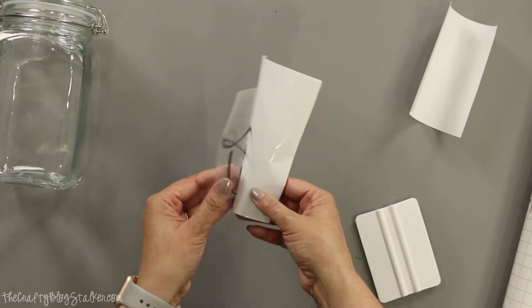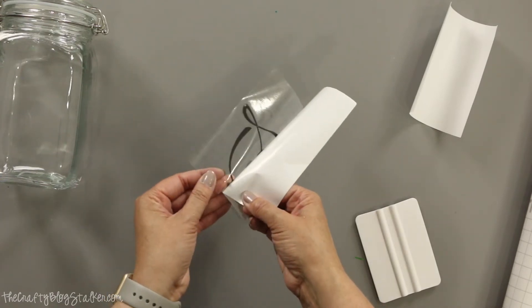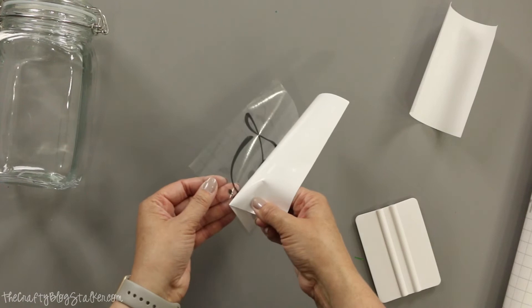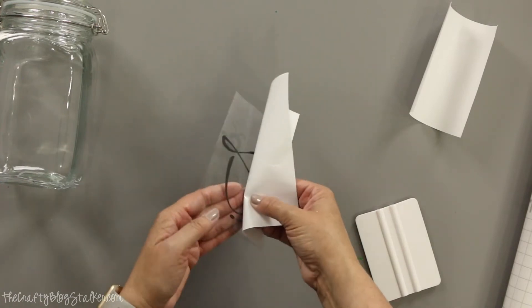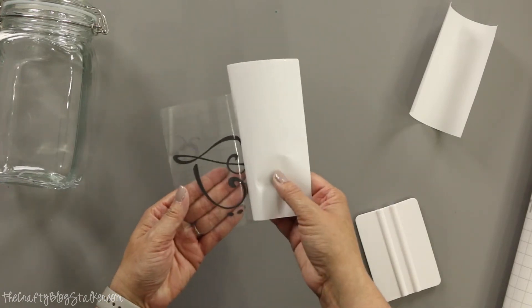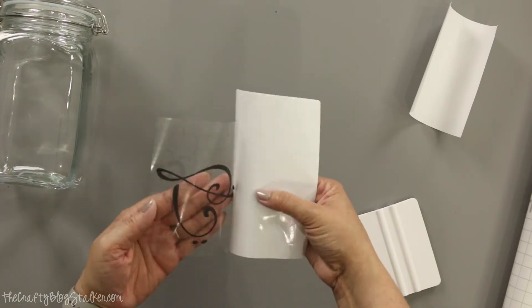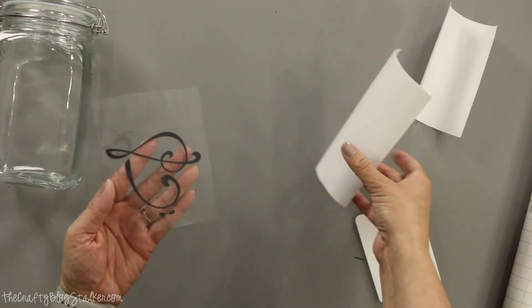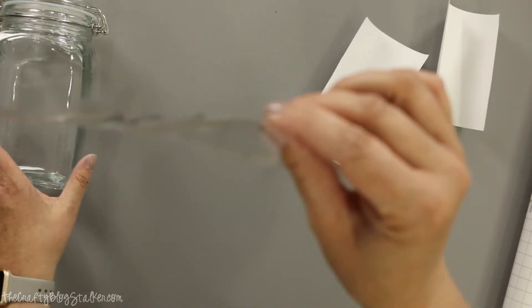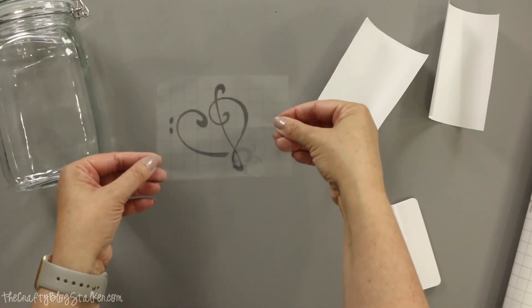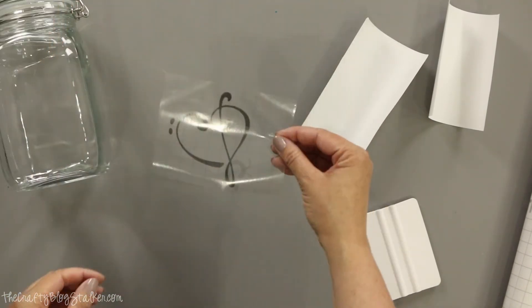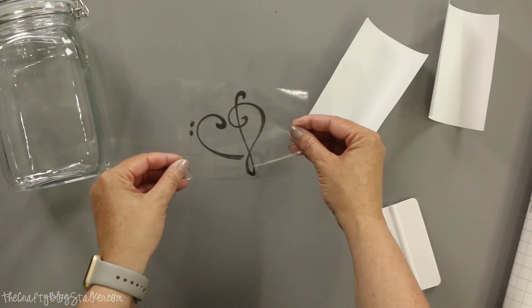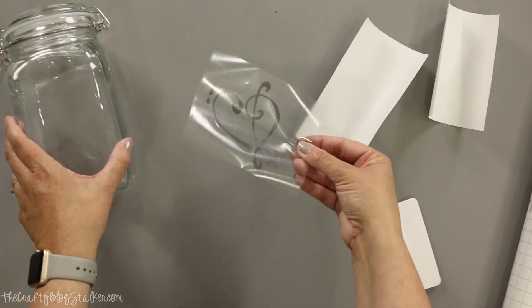Make sure it picks up every little part of that vinyl. Sometimes it needs a little bit of help, a little bit of prompting. Okay, so now I've got the vinyl on my transfer sheet here. So you can see that that heart now is on my transfer tape.